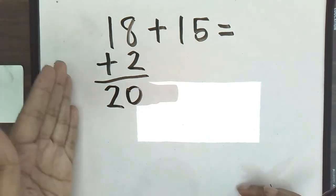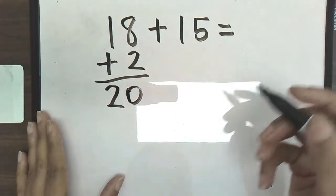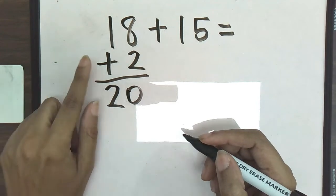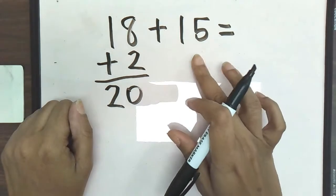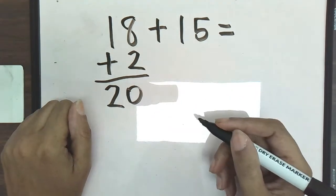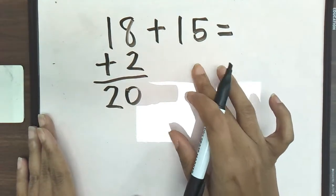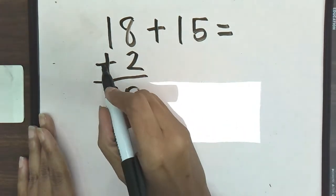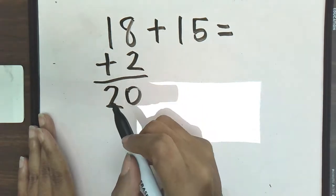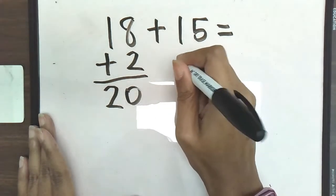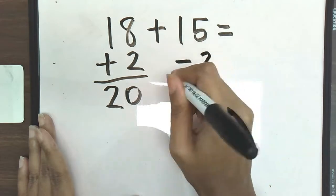With compensation, however, whatever you do to one side, you do the opposite to the other side. Because if I added two here and also added two here, my answer would be incorrect. So I'm compensating for what I added here. So that means I have to take some from here. So if I added two to my 18 to get me to that 10, I need to subtract two from my other side.